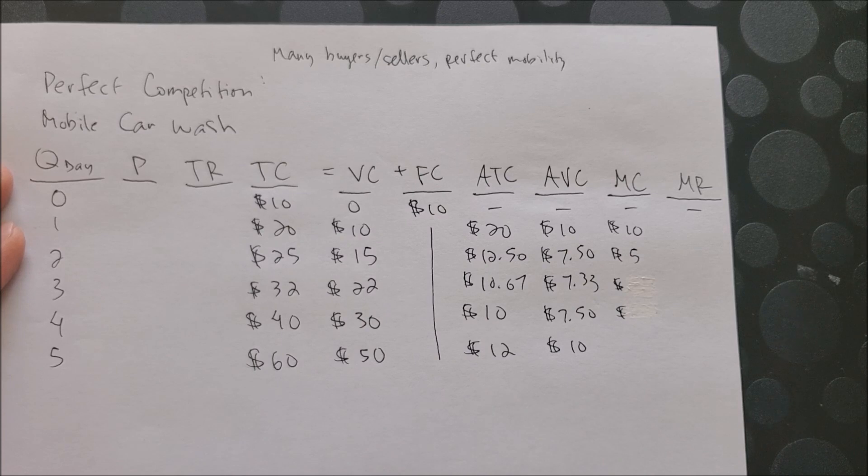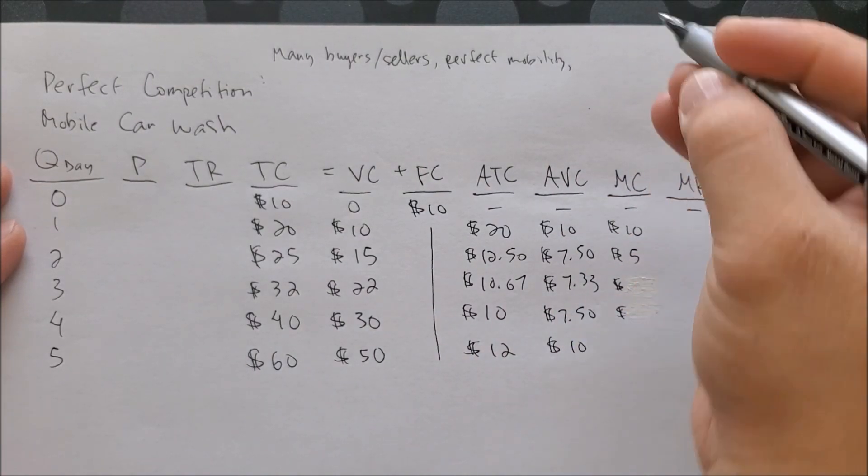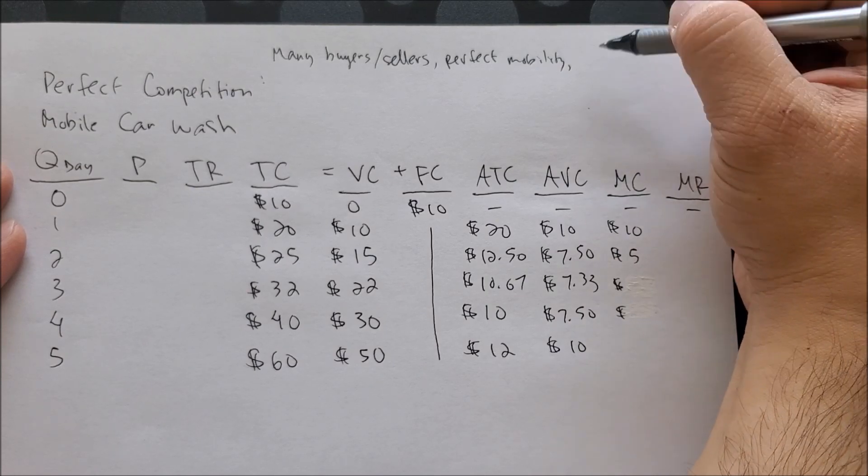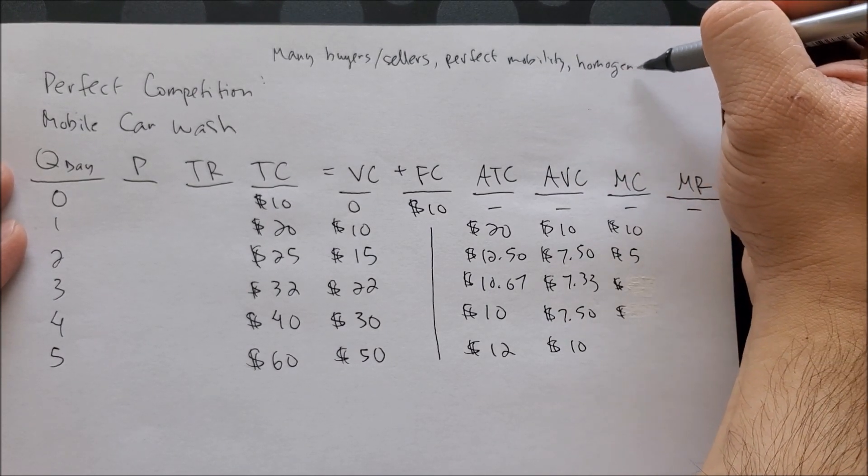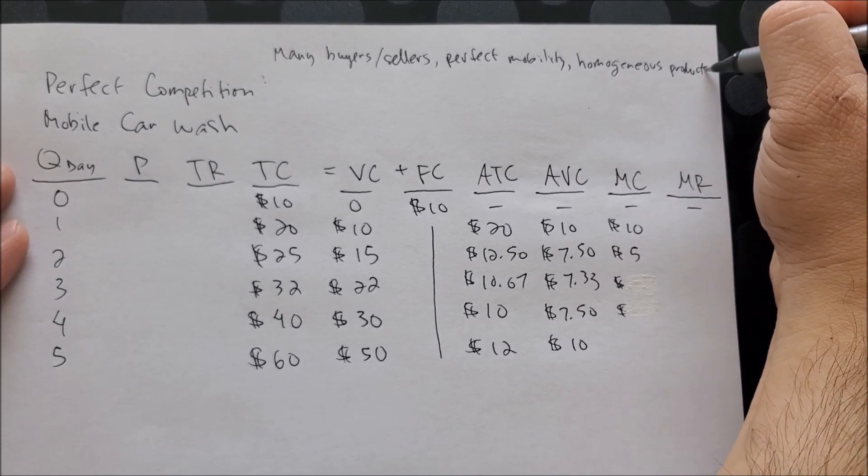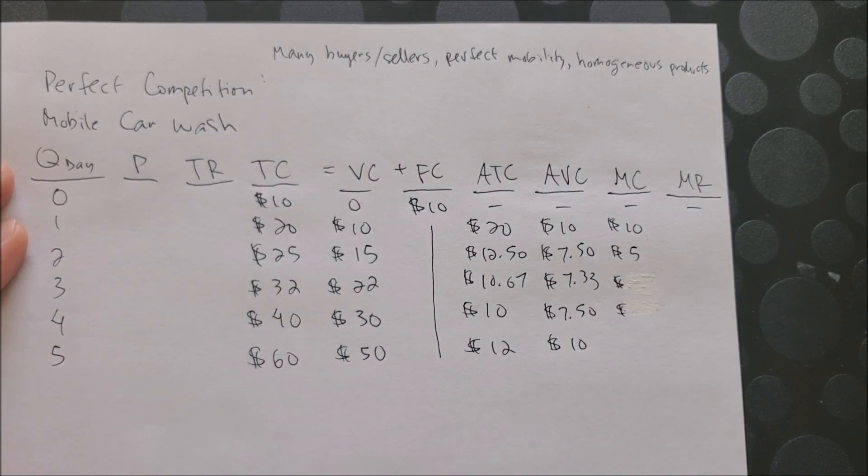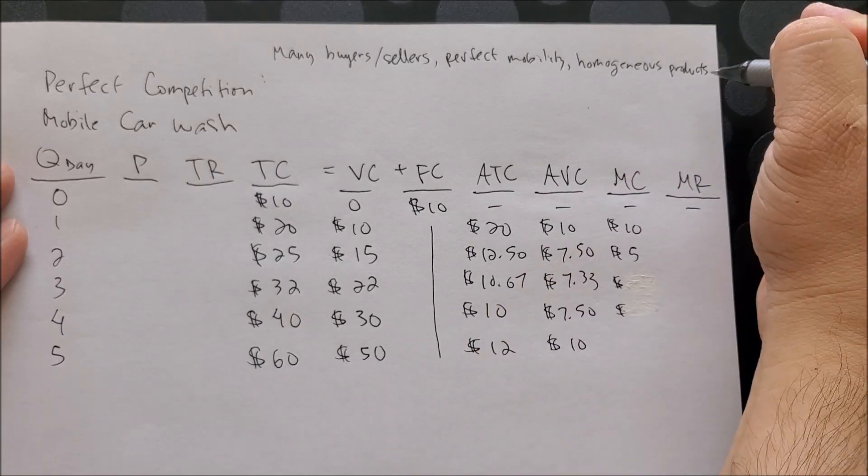At the same time, the goods that are sold in a perfectly competitive market are called homogenous. So there's really no branding or advertising when it comes to products. We're not looking at Nike shoes or Reebok shoes, but rather we're looking at black shoes or red shoes without any branding whatsoever. So it's all homogenous.